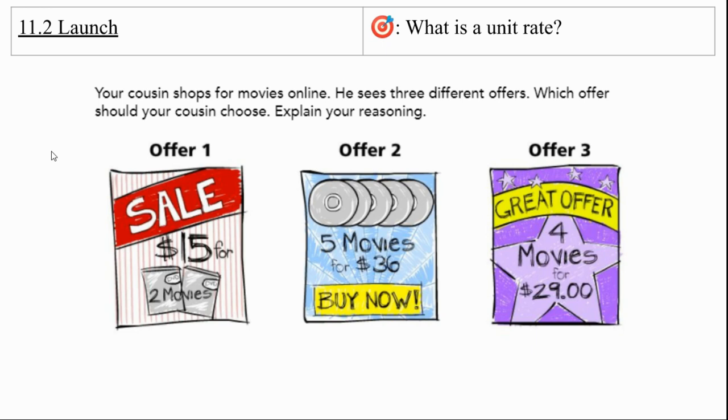So for the $15 for two movies, I don't think that one's too hard to figure out. You're just going to take $15 and divide it by two, and that's going to give you the cost for each movie. So each movie there is going to cost $7.50.